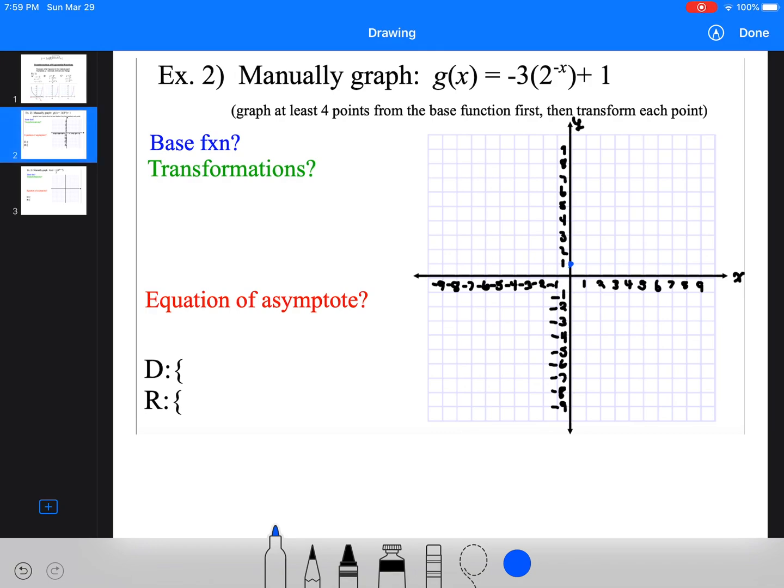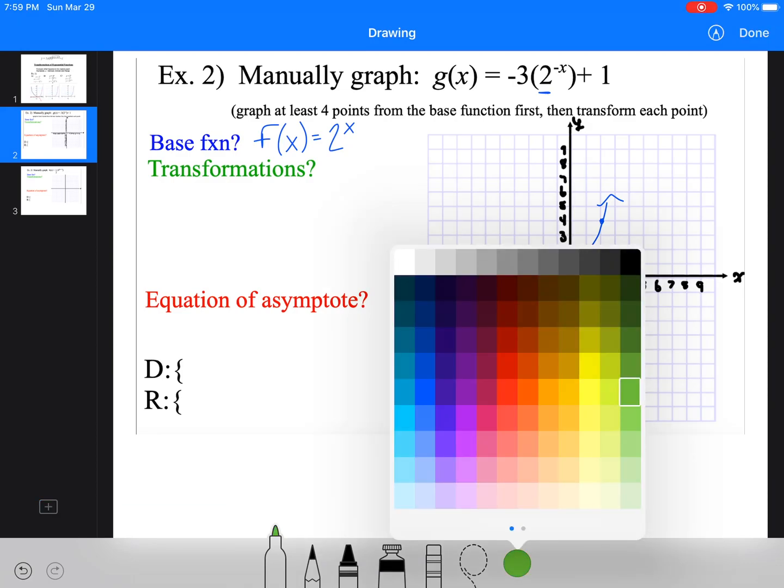So our base function, I'm going to graph the base function in blue. So we've got zero and one is typically our graph. Our base function here is f(x) = 2^x. Two is our base. It doesn't change. Two is here. Our exponent is x. So 2^0, 2^1, 2^2, and 2^(-1) would give us a half. Now that one might be hard to change after, but good enough.